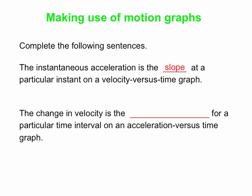Now, if you have an acceleration versus time graph, you can get some information about the velocity — specifically, about the change in velocity. The change in velocity is the area under the curve for a particular time interval on an acceleration versus time graph. So on your acceleration versus time graph, you pick a time interval and find the area under the curve — that's the change in velocity.